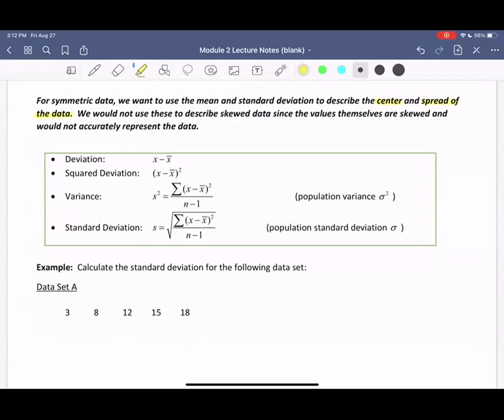The spread tells us how far away we can expect any random data value to be from the mean. We would not use these to describe skewed data, since the values themselves are skewed and would not accurately represent the data. Symmetric data is when we use means and standard deviations.